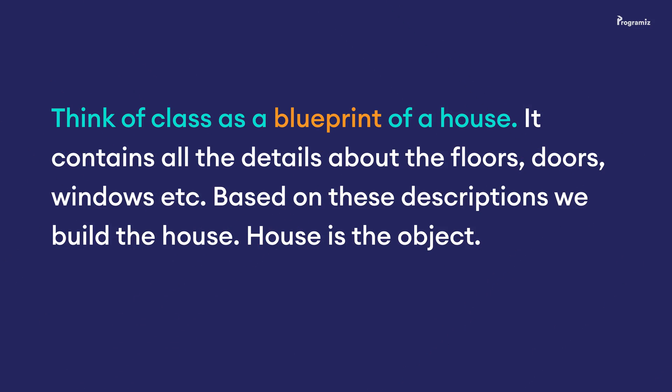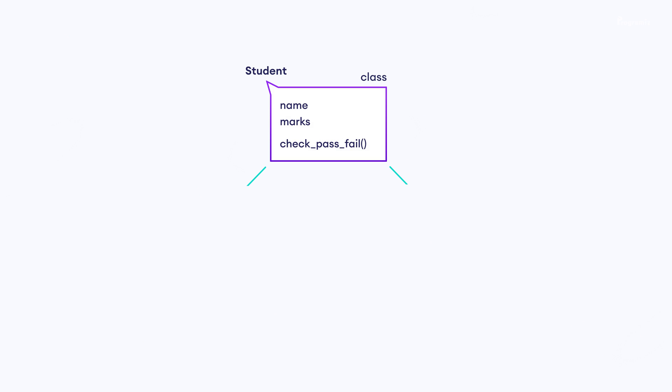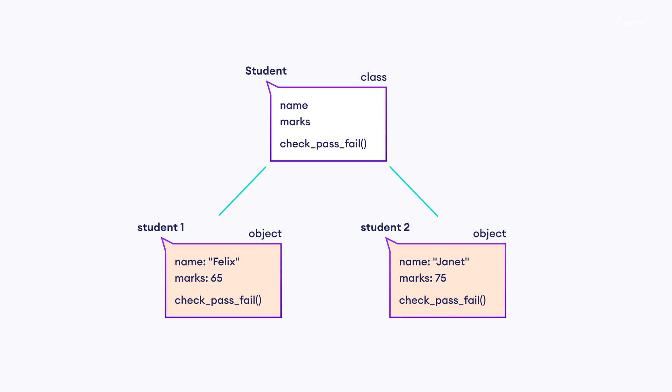Think of a class as a blueprint of a house. It contains all the details about the floors, doors, windows, etc. Based on these descriptions, we build the house — the actual physical house is the object. As many houses can be made from a house's blueprint, we can create many objects from a single class. So from our Student class, we can create as many student objects as we want.